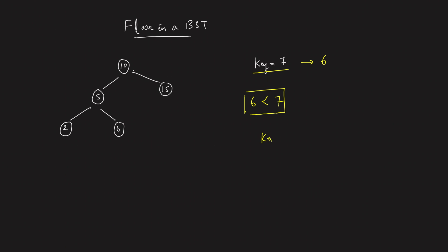Similarly, if I modify the key to be something like 14, which is the greatest value that's smaller than or equal to 14, that's going to be 10. So that's the definition of floor in a BST. I need to figure out the greatest value that's smaller than or equal to a given key. So how do you do that? Very, very simple.